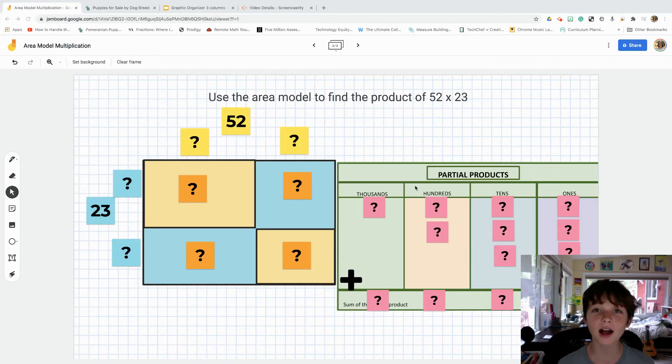Don't forget to subscribe to the channel, check out the comments, and you can get a copy of this Jamboard for your use in your class. Hello, you guys, and welcome back. Today, I'm going to be using Jamboard, and we are going to use this area model that you can see right here to find the product of 52 times 23.